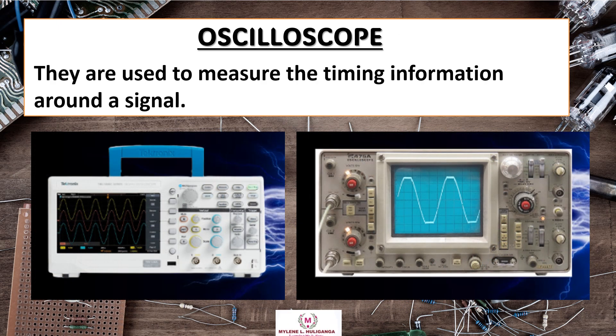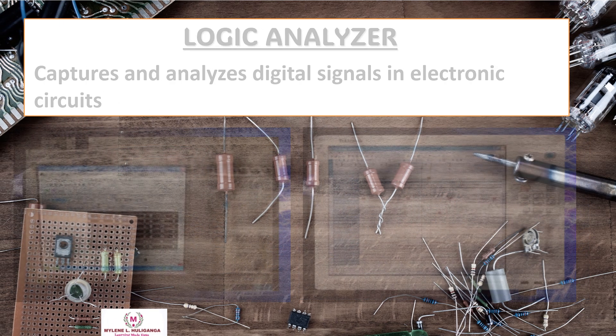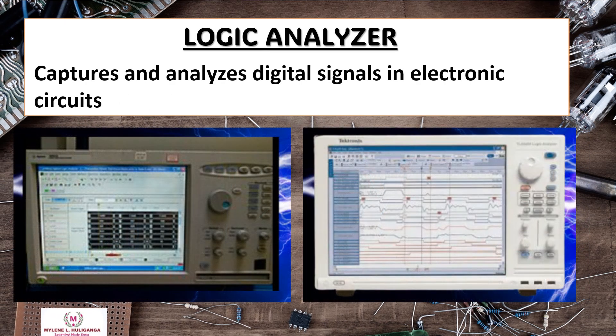An oscilloscope is used to measure the timing information around a signal. A logic analyzer captures and analyzes digital signals in electronic circuits.